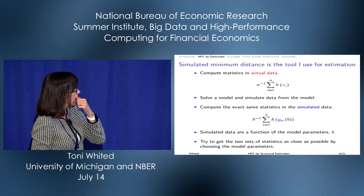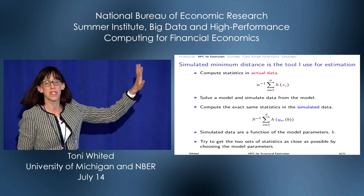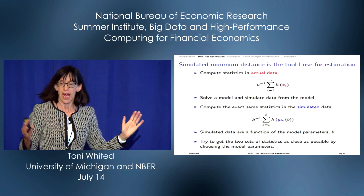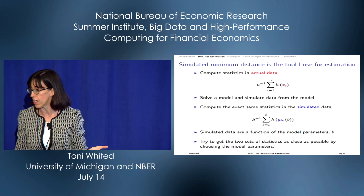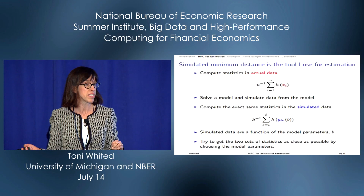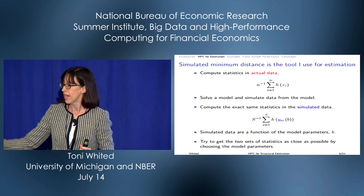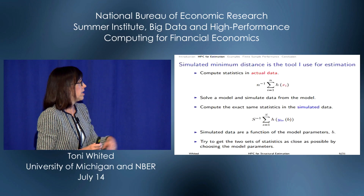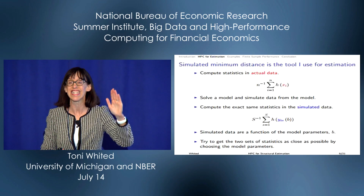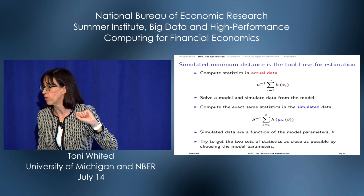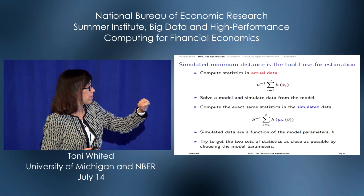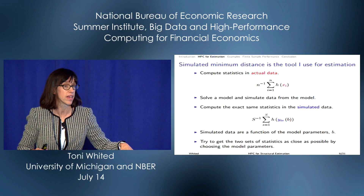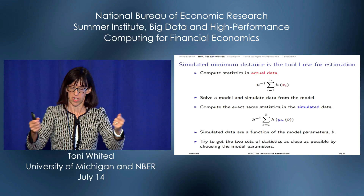What I've been using to estimate these models is a simulated minimum distance estimator. You compute some statistics in actual data — the function h can be something simple like a mean, or an OLS regression coefficient, or an estimator from a duration model. Then you solve the model and simulate data, computing the exact same statistics on simulated data. The simulated statistics are functions of model parameters: if the parameters are this, the data looks like something; if they're that, the data looks like something else. You try to get these statistics as close together as possible.